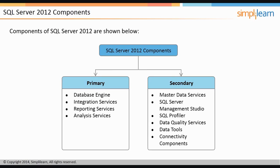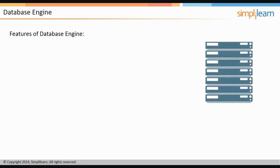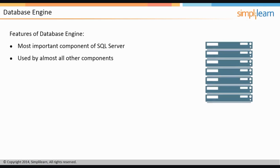The database engine, a primary component, is probably the most important component of SQL Server. In fact, this is so important that even the other three primary components have a dependency on this one. All of the other components require the availability of the database engine component — if not on the same server, then at least its accessibility on the network.